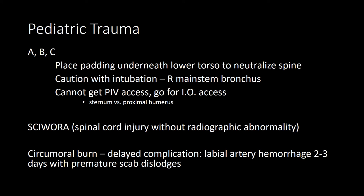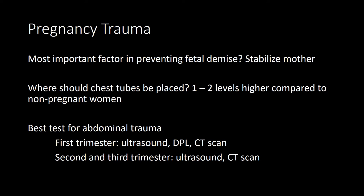For pregnancy trauma, the most important factor in preventing fetal demise is stabilizing the mother. When placing chest tubes in the pregnant patient, go one or two levels higher compared to the non-pregnant patient. The best test for abdominal trauma in the first trimester is ultrasound, followed by DPL, then CT scan. In the second and third trimester, use ultrasound and CT scan.